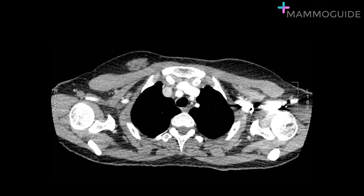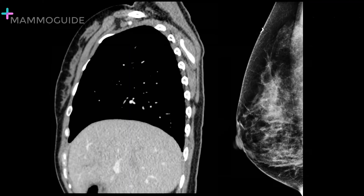Here's an example of a CT scan where a mass was commented on in the right breast. The patient was sent for mammographic evaluation, and on the mammogram, this turned out to be simply an island of normal breast tissue. If the radiologist had originally performed sagittal reformats of the breast, they would have seen this looks like just a clump of normal breast tissue, and perhaps the diagnostic evaluation could have been avoided.